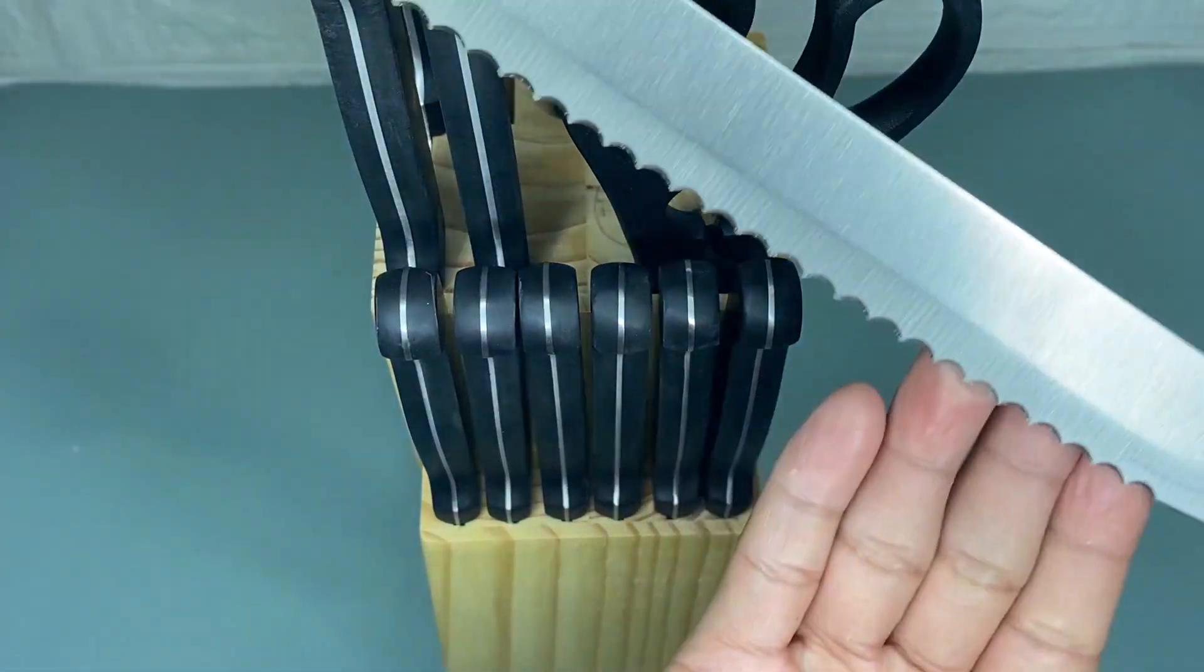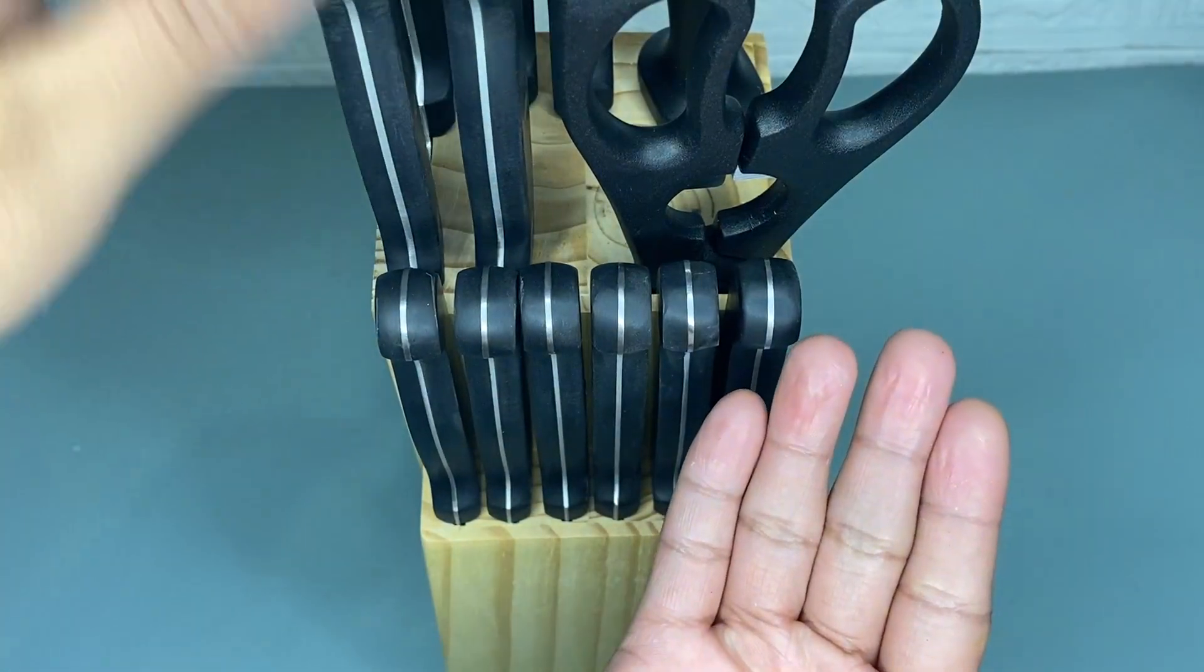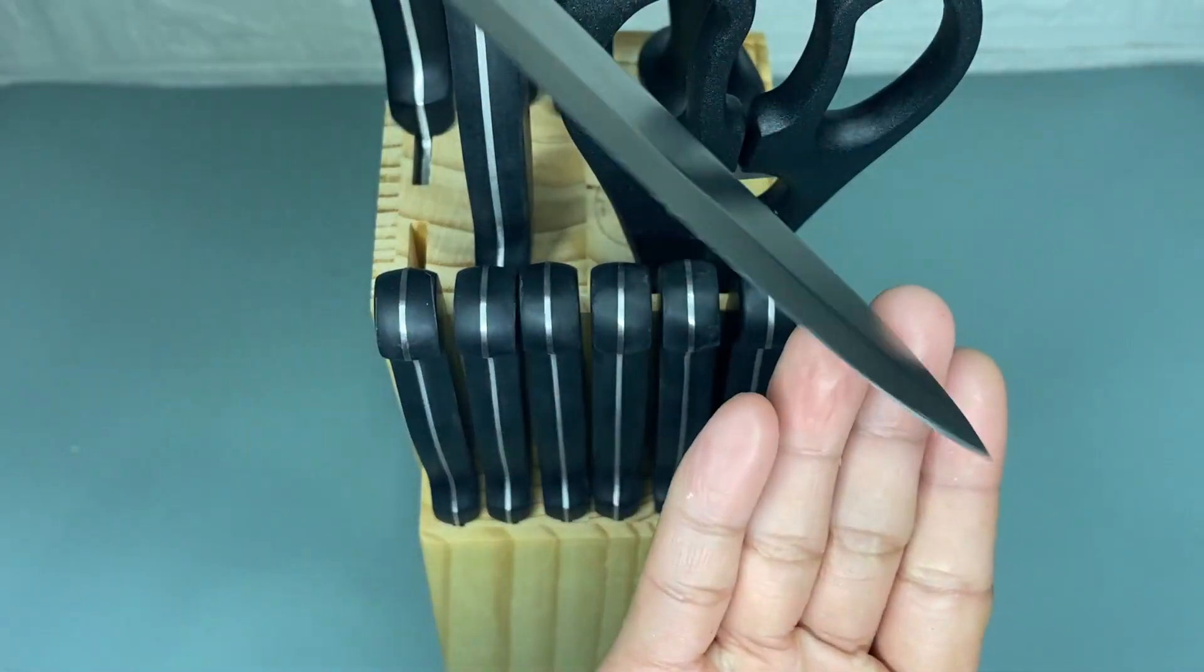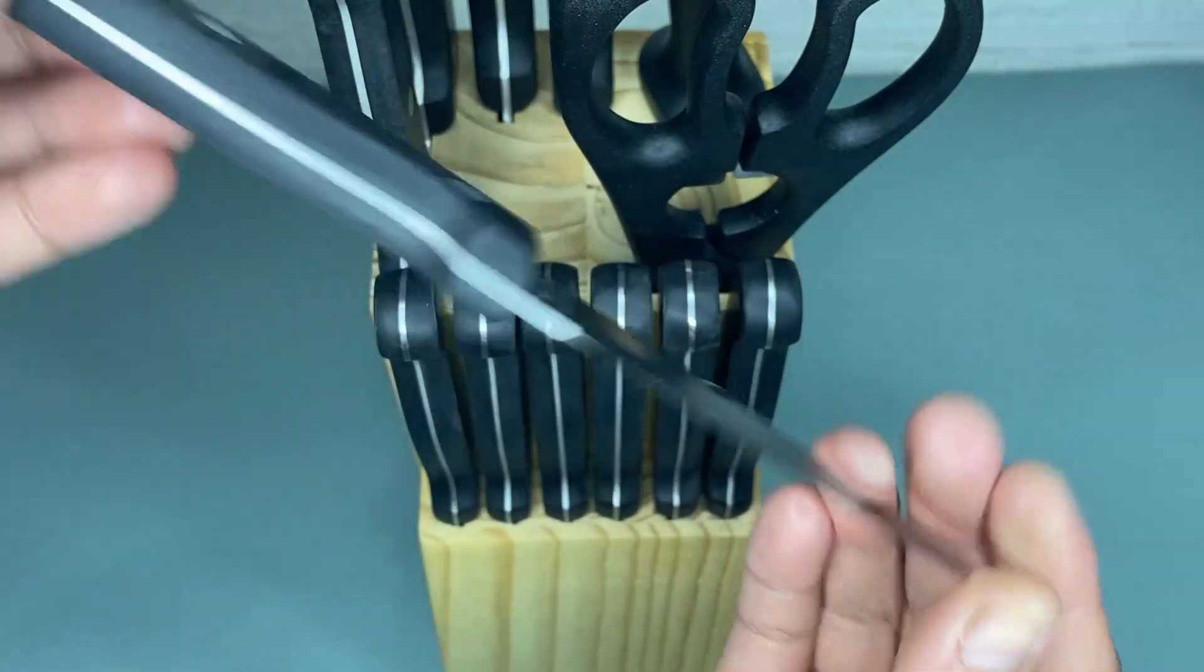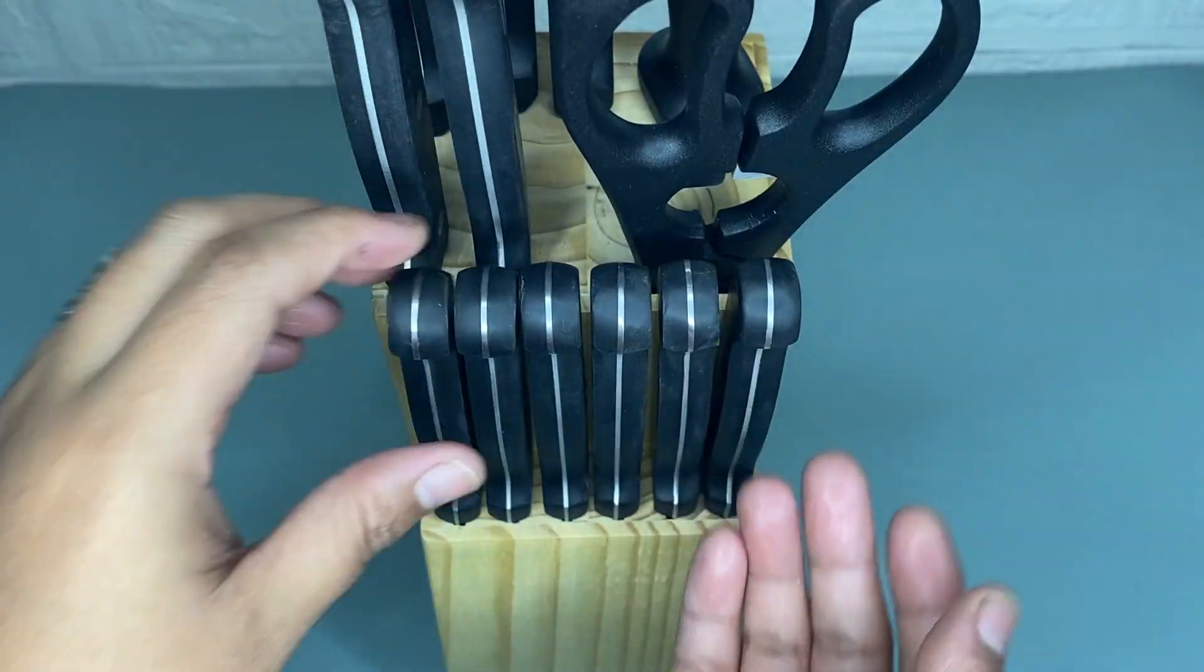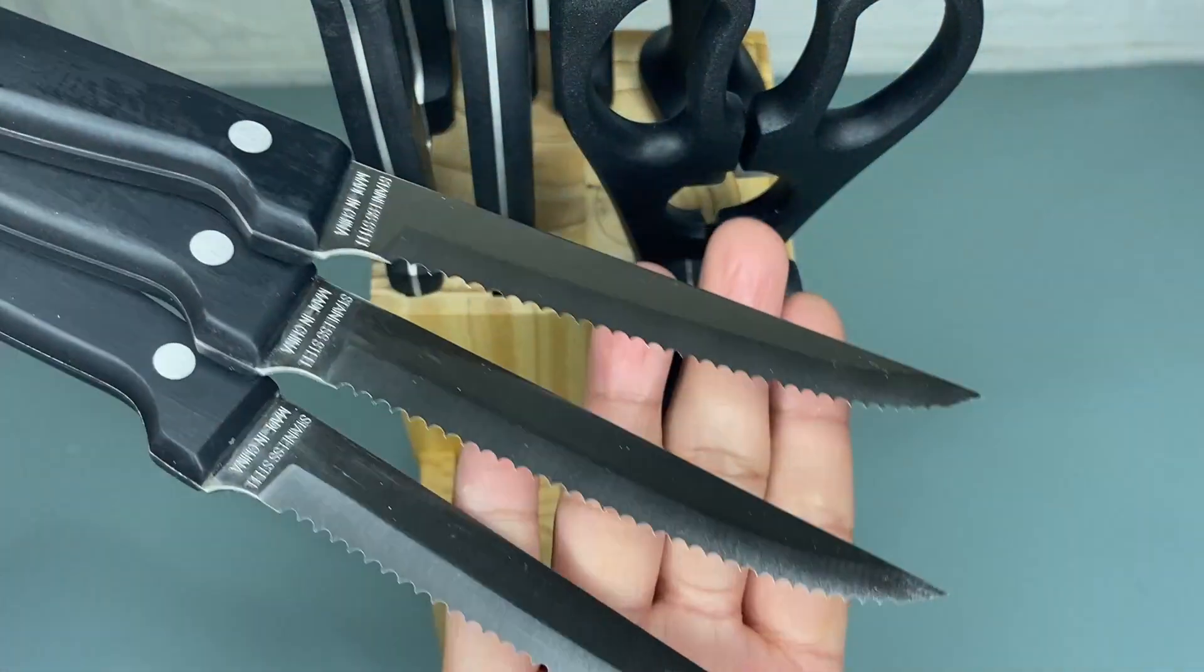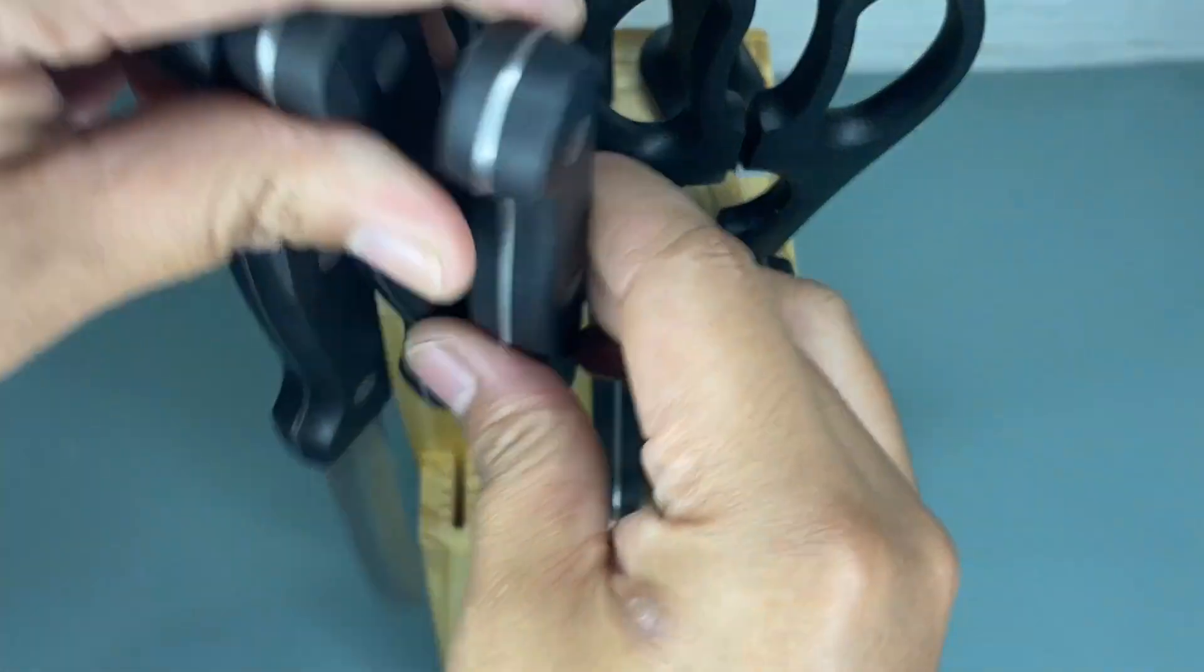And we also have here a 5.5-inch utility knife, and we have here a 3.5-inch peeling or paring knife, and we also have here 4.5 inches of these six pieces of steak knives.